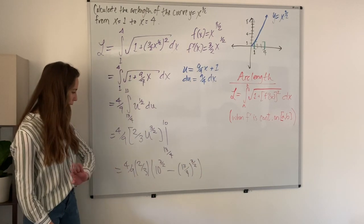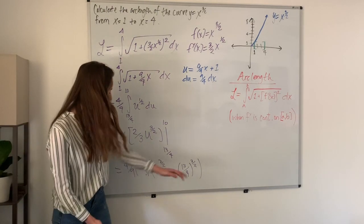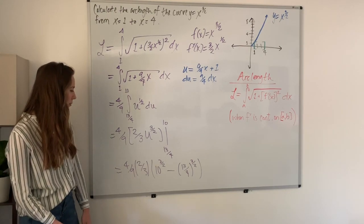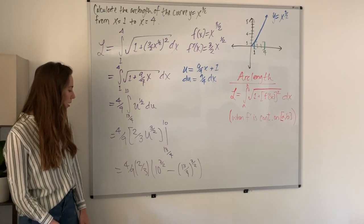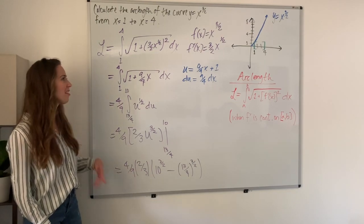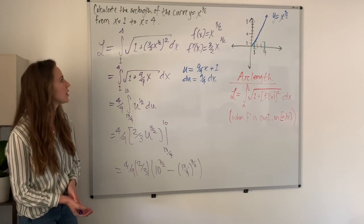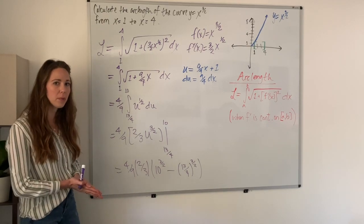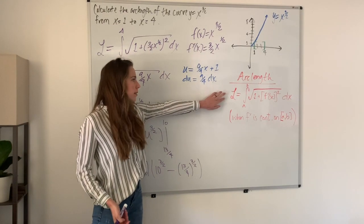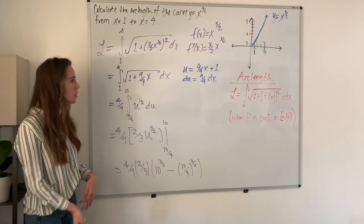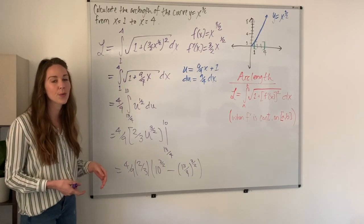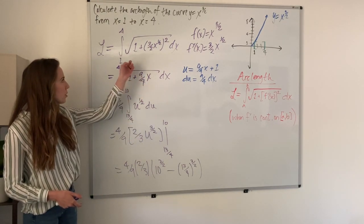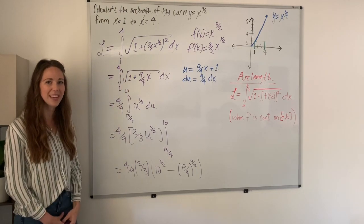I'm not going to bother to evaluate that because it's just kind of messy, and you can stop right here. There's not really a need to simplify. This would be the arc length of our curve from 1 to 4. The new thing with this problem is just being able to use this arc length formula and put everything in the correct places. We need to know the derivative of our curve and our bounds so we can place those all in the right place.